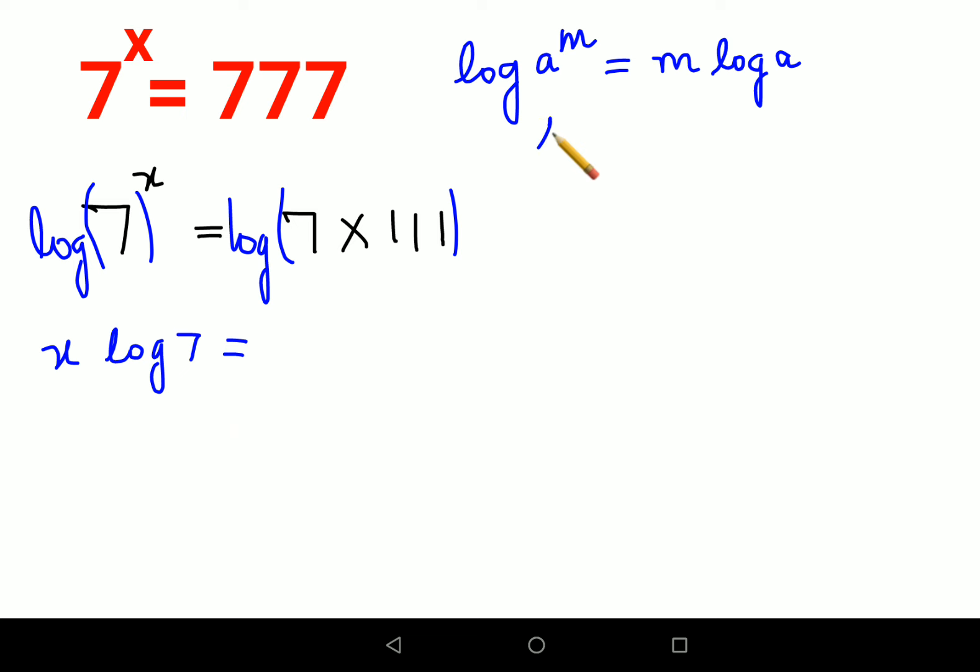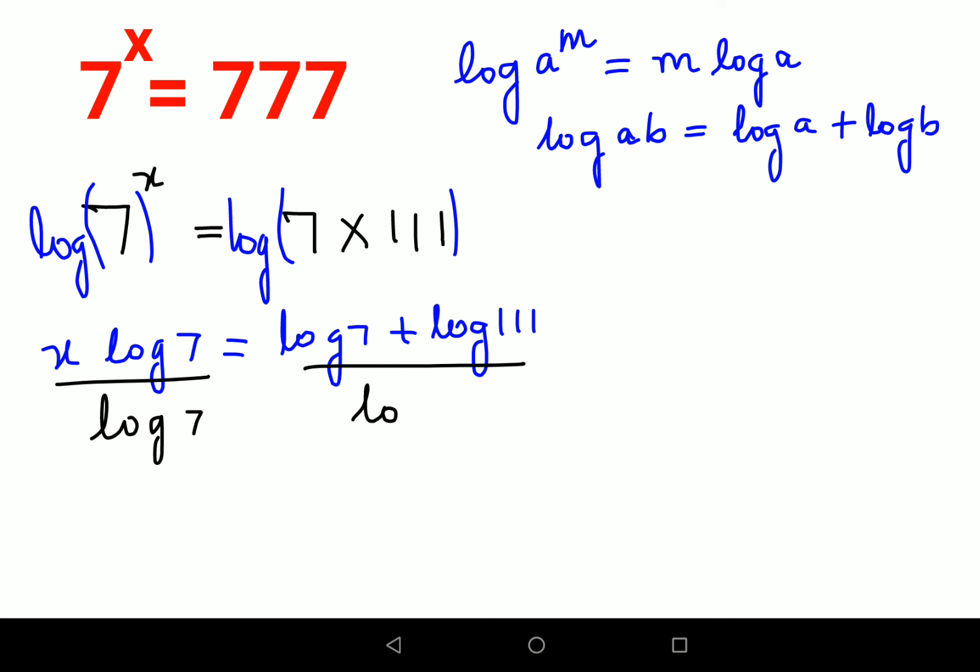Now log of a into b can be written as log a plus log b. So here this can be written as log 7 plus log 111. Now after this what we should do is we are trying to find the value of x. So we will divide both sides by log 7. So now this is cancelling.